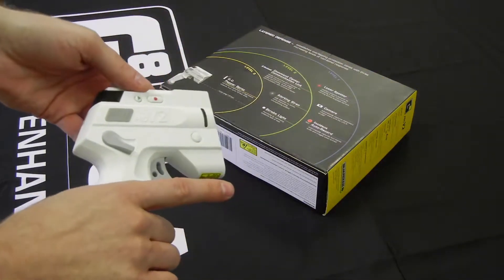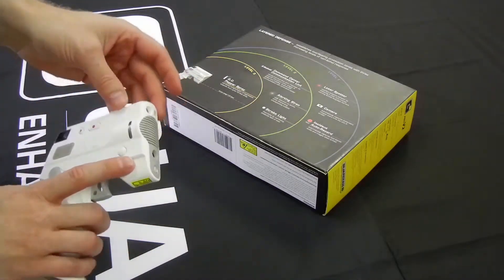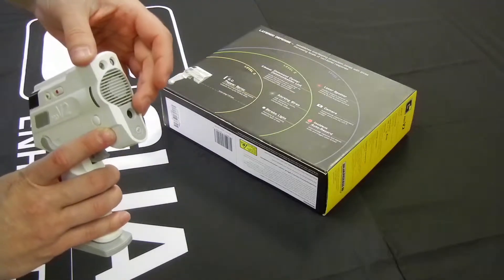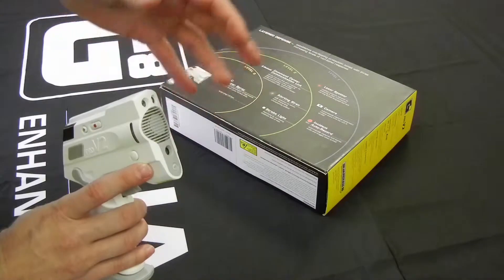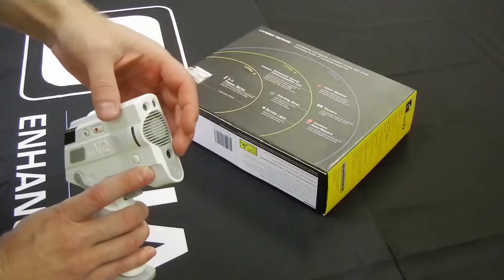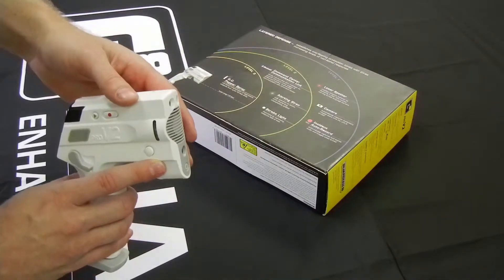So for a level one activation there are three things that are going to happen. One, the laser spotter will activate. Two, the imager or the camera will activate as well and it's going to start taking pictures between one and three pictures per second of the incident sort of out in front of me. And then the third thing that's going to happen is that the audio will start recording onto the device.